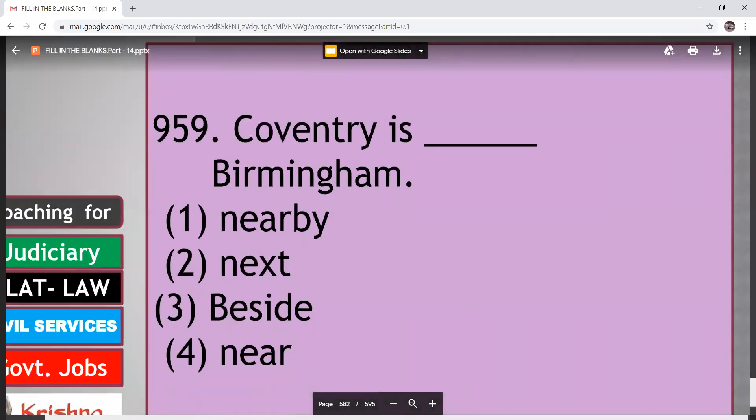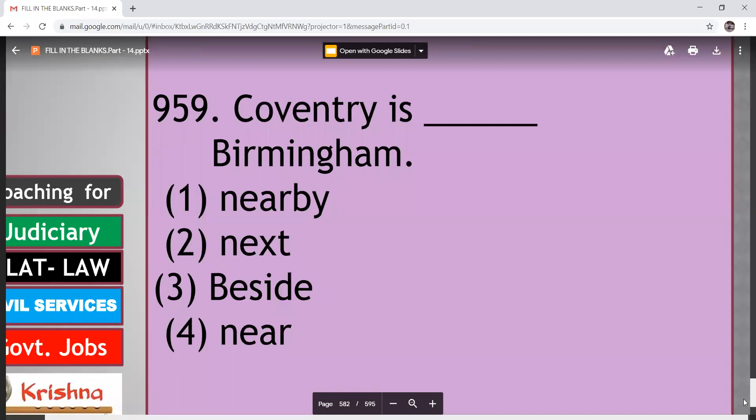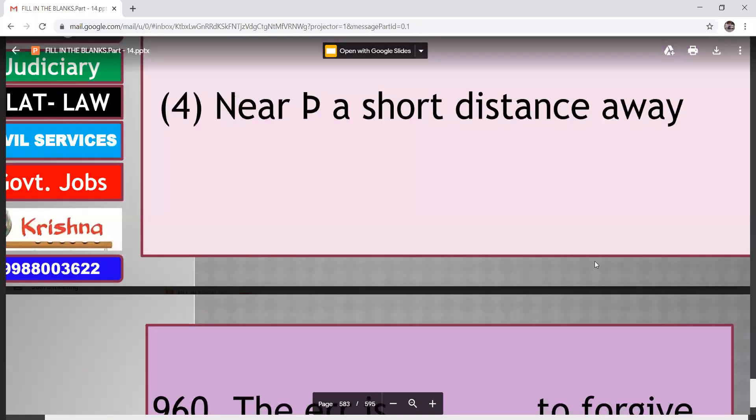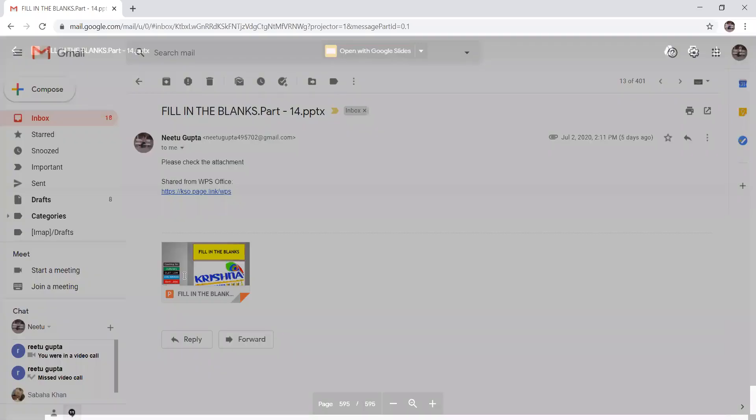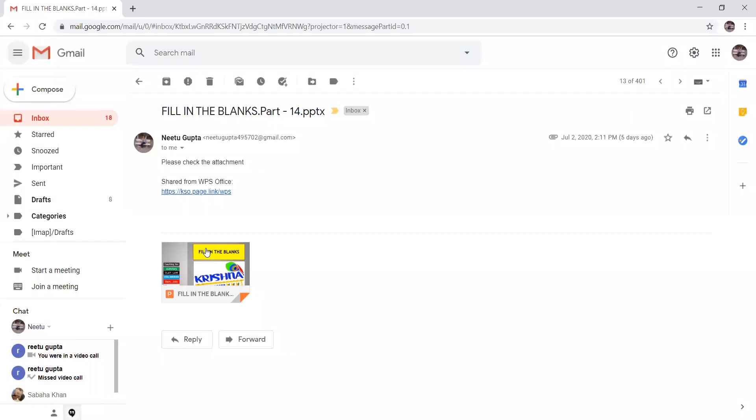Coventry is dashed nearby. Next, beside, near. So here you have to say fourth option, near. Coventry is near. There's some problem. We left with only two. The air is dashed to forgive divine. Human, natural, kindness, human. So here your answer is to err is human. To forgive is divine. First option, human. It means it is a human nature to make mistakes and it is important to forgive people.